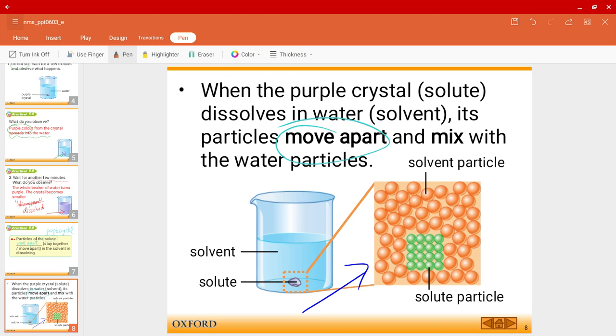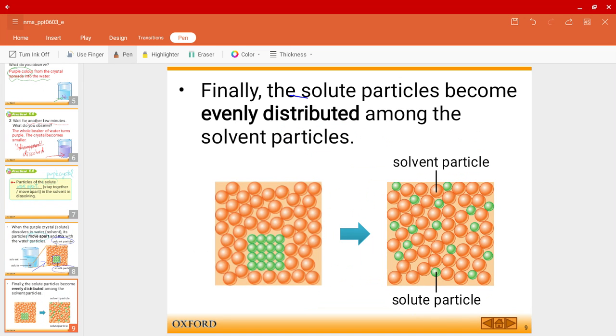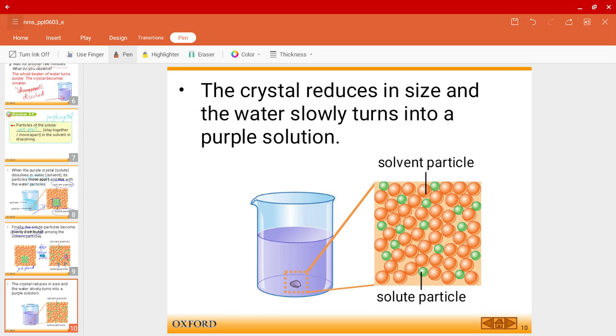So let's look at the particle model diagram over here. So over here the orange ones are the solvent particles, the green ones are the solute particles. So originally when you add the solute into the solvent, it would look something like this. The solute eventually will be evenly distributed among the solvent particles. So this is when you just place it inside, you just placed the purple crystal, and after a few minutes when you allow it to sit, eventually the solute particles will start to be evenly distributed. So they will take up this space in between the other solvent particles. And the crystal will eventually reduce in size and the water will slowly turn into purple in color.